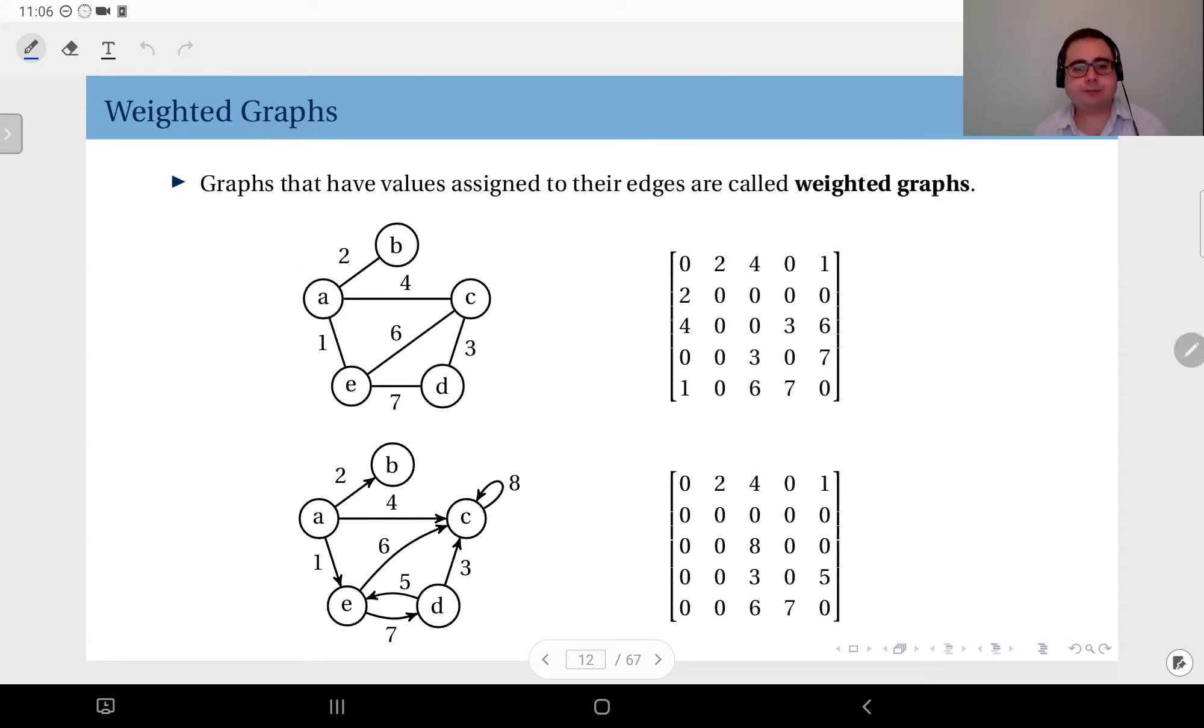If you have a directed graph, since the direction is important the matrix turns out to be non-symmetric in general. The direction is from the row to the column. Assuming that I'm using the natural order a, b, c, d, e, this entry corresponds to the weight of the edge from vertex a to vertex b. Similarly, this one is the weight of the edge from vertex a to vertex c, and so on. For instance, this one is the weight of the edge from vertex c to itself, this loop here. Using this you can fill in the entire adjacency matrix with the weights.